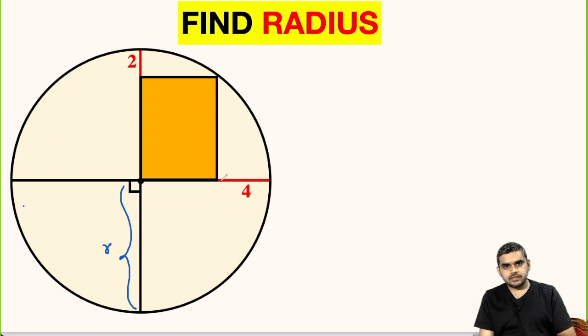This distance is 4 units, so this distance will be r minus 4. Also, this distance is 2 units, so this will be r minus 2 units.